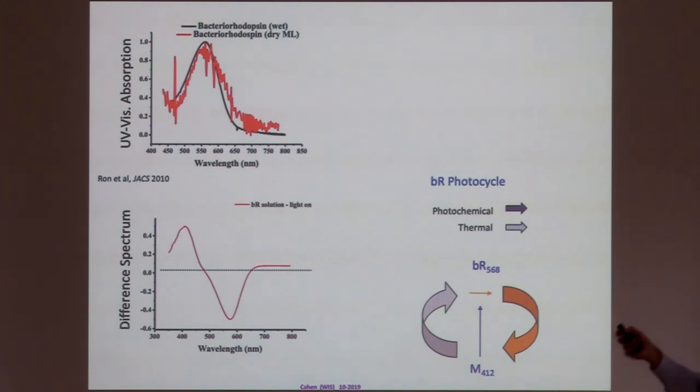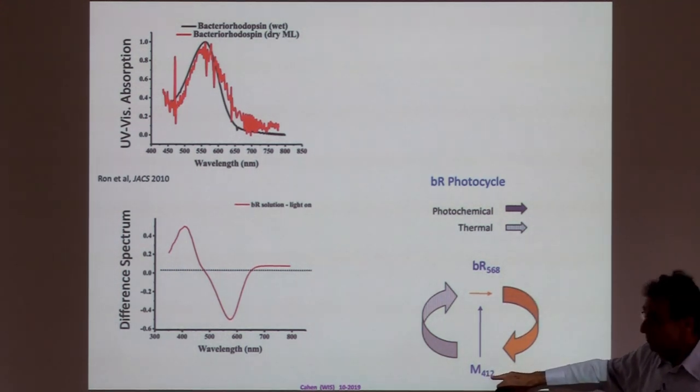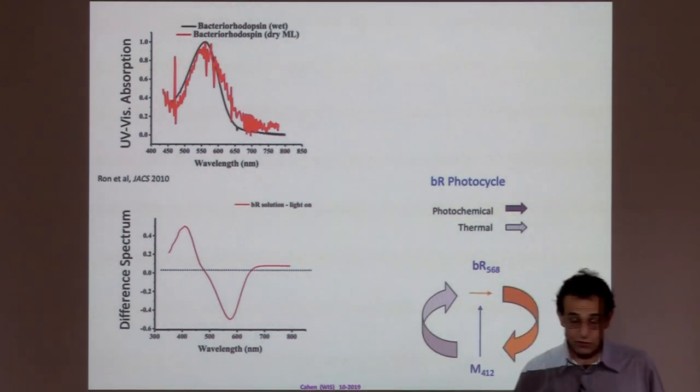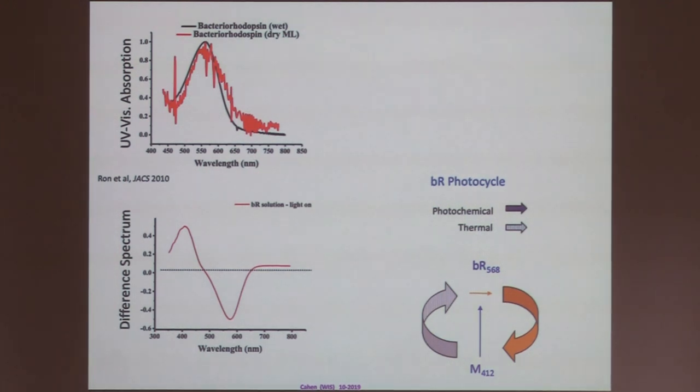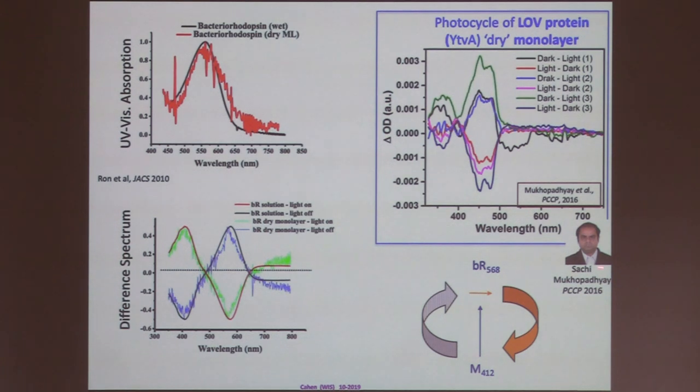Now, you can do something more. There is a photo cycle, which is what we also have in our eye. So, by illuminating with 568, you get a change of absorption to 412. And then, by blue light or thermally, it'll go back. So, you can make a difference spectrum. And when you do that with light on and off, you get this in solution. And you see that the monolayer follows this exactly. That means that that function, which is related with whatever is happening in the protein, as a result of the isomerization of the retinal, is still intact. And something else was done. A similar was done with a photo cycle of the light oxygen voltage-sensitive protein with dry monolayers, where we also found that the dark light cycle of the monolayer followed that in solution. These are all at room temperature.